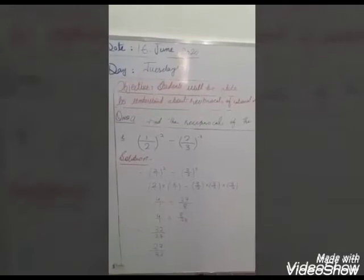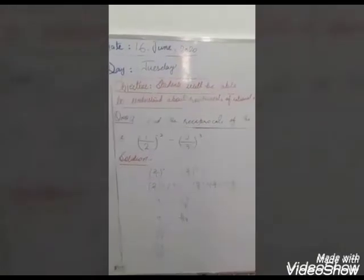Question number 9 is: find the reciprocal of the following rational numbers. Rational numbers are given and you will find the reciprocal of the rational number. It means finding the inverse.